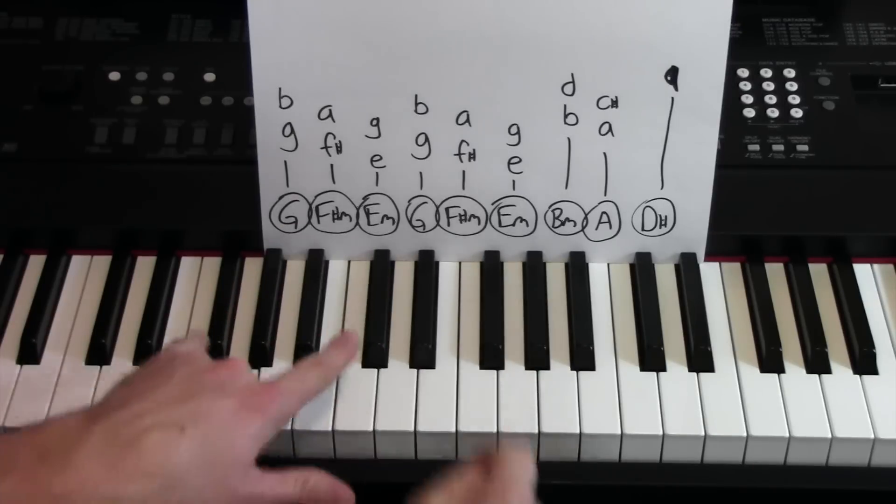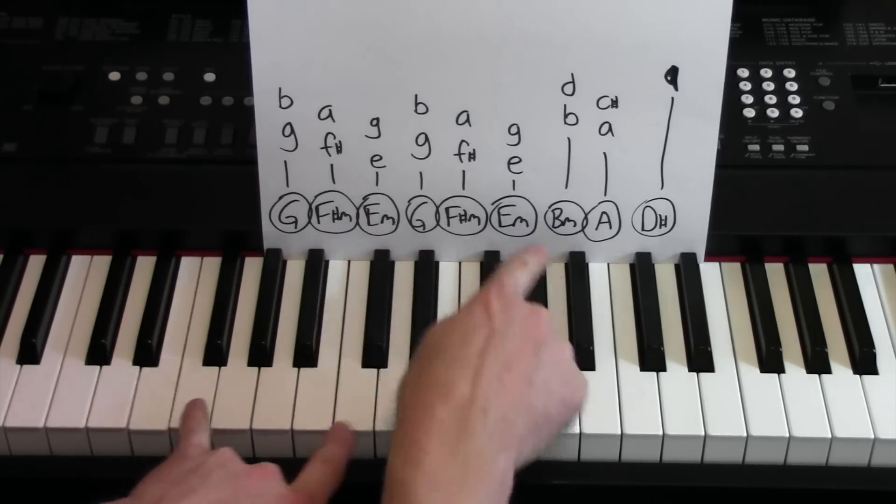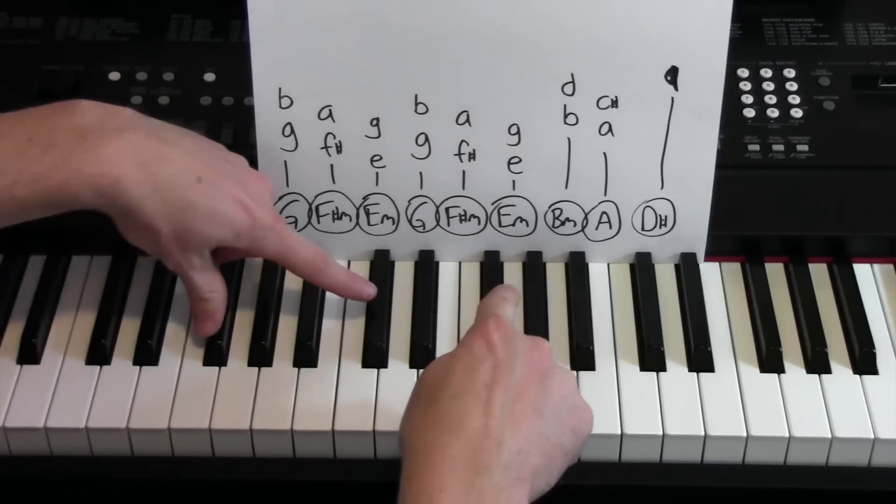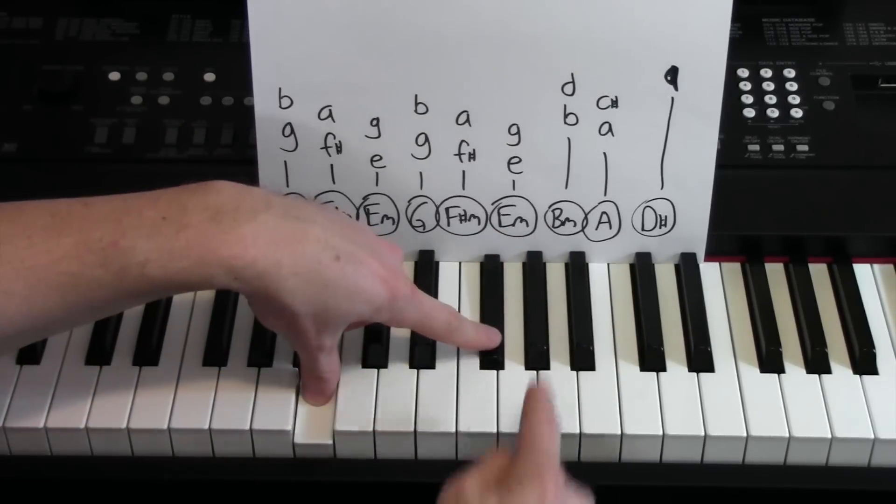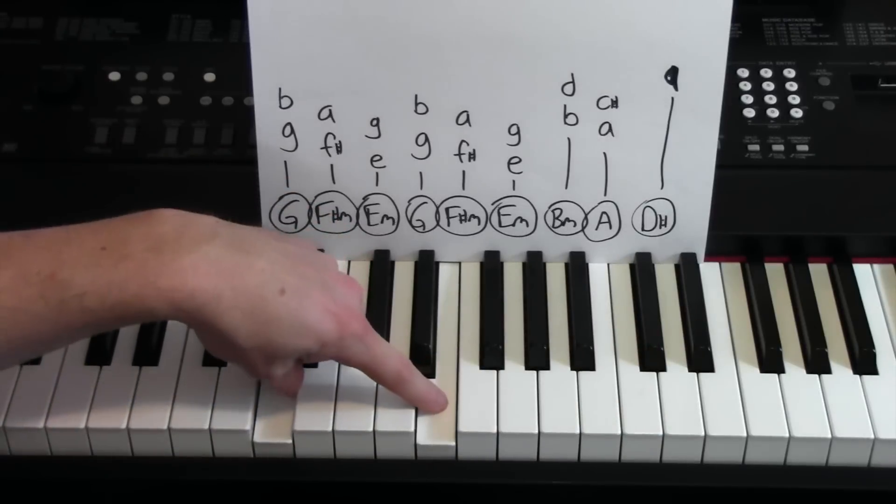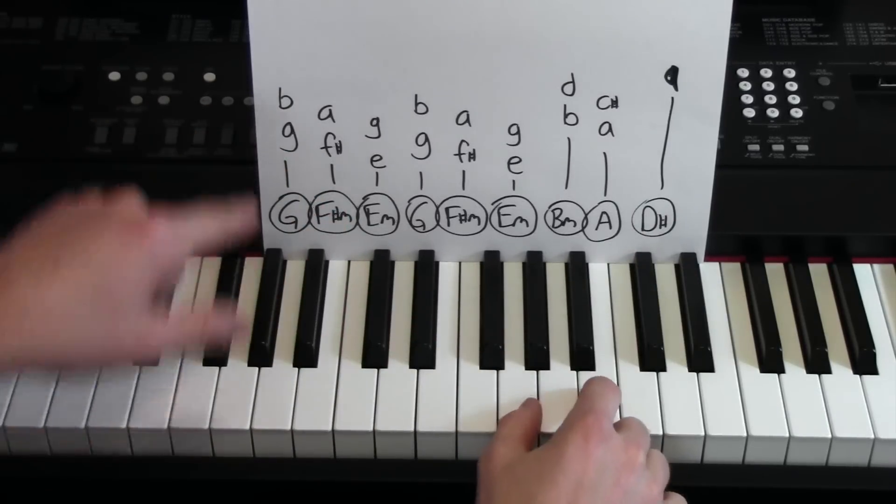Alright, left hand I'm going from G to F sharp, those two, E minor, G, F sharp, E, B, A just a single, D sharp, kind of goes out of key there. Alright, putting that all together.